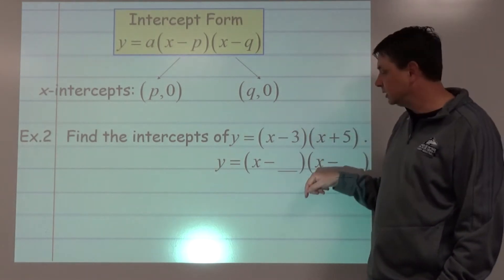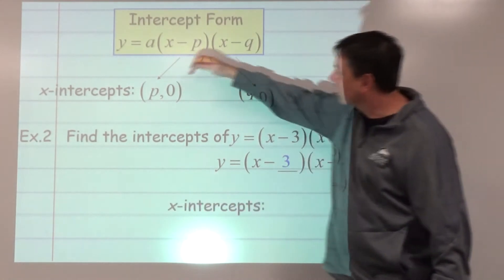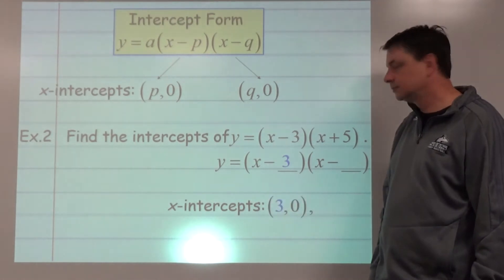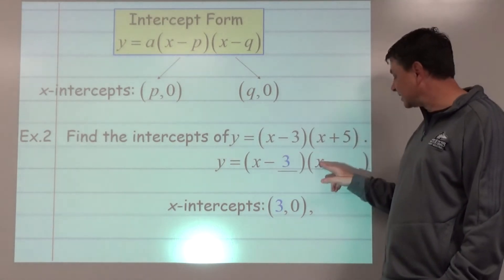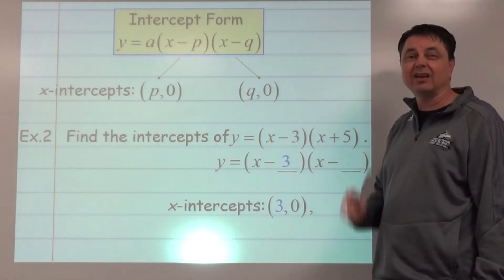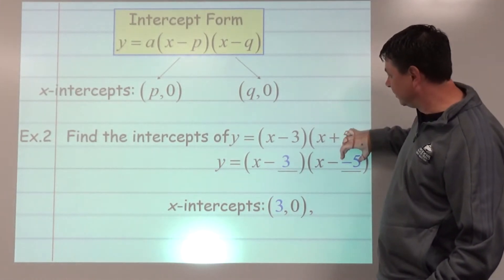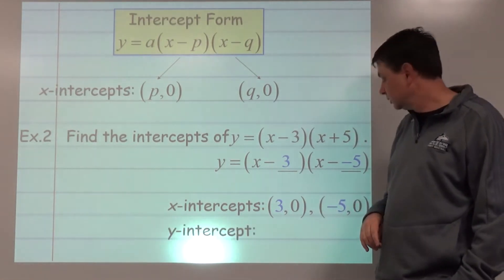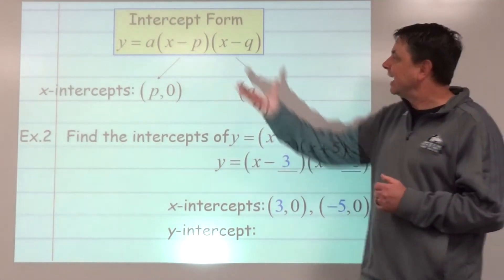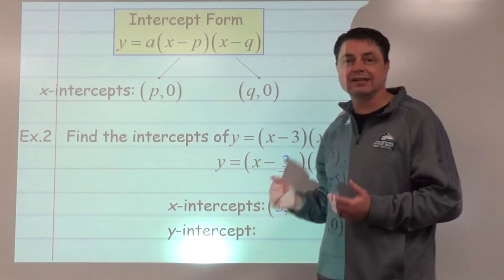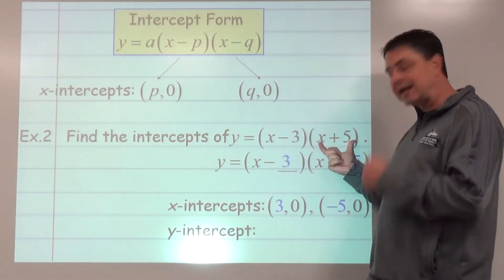For x-intercepts, think opposite of the number inside each factor. x minus 3 means 3, so (3, 0) is an x-intercept. x plus 5 is the same as x minus negative 5, so negative 5 comma 0 is an x-intercept. A good strategy: as long as the factor starts with x, just think opposite to get the x-intercept.